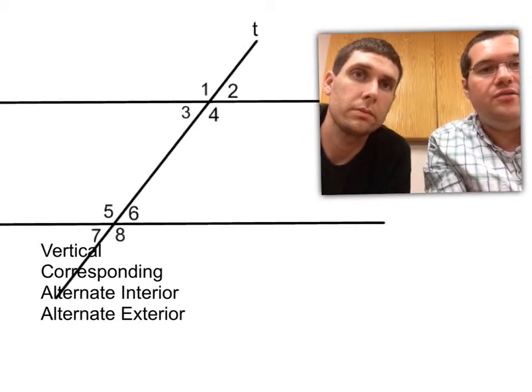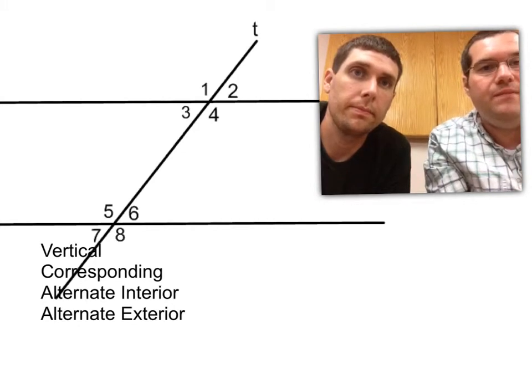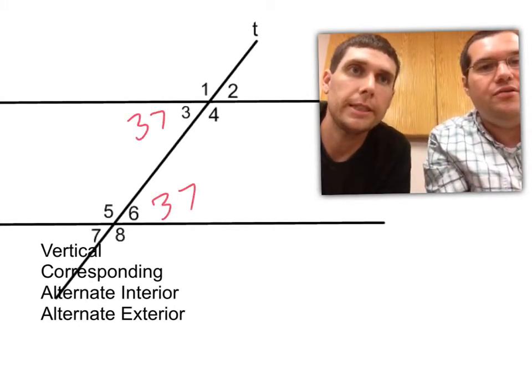So angle 3 and angle 6 would be congruent. So if angle 3, let's say, would be 37 degrees, then we know that angle 6 would be 37 degrees.